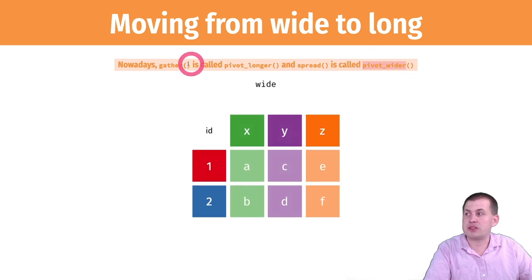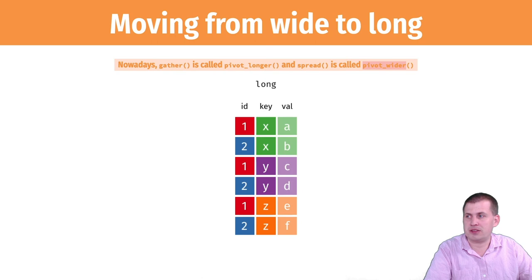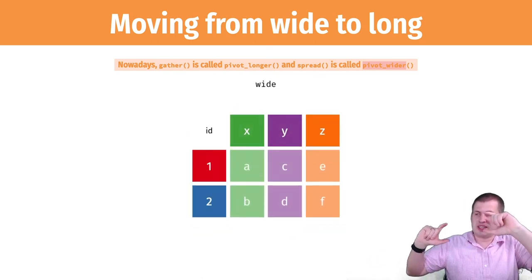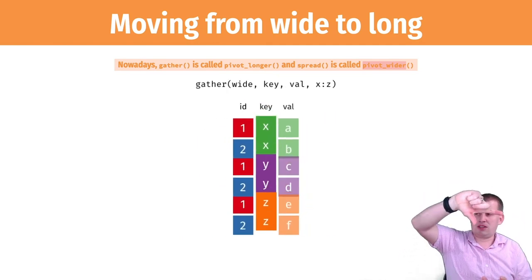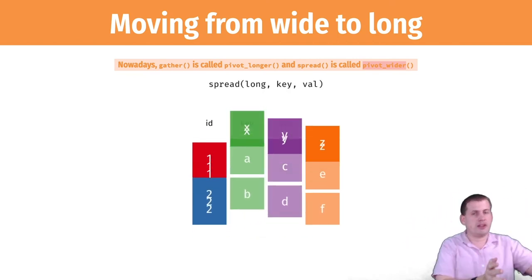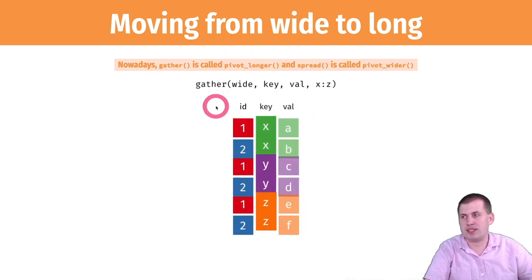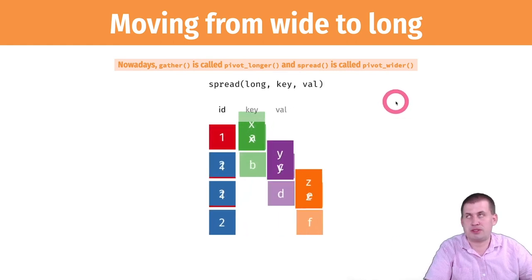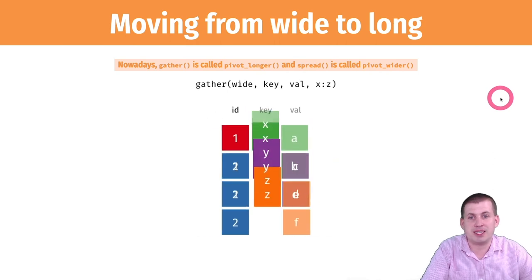The R functions you use to switch between formats are called pivot_longer and pivot_wider. They used to be called gather and spread, which is where this animation comes from. If you watch the animation, you can see it moving wide data into long data — you're not losing anything, just rearranging where the cells are and what the columns are. By doing that, you can convert your data from wide and untidy to long and tidy. You'll get practice doing that with lots of examples.